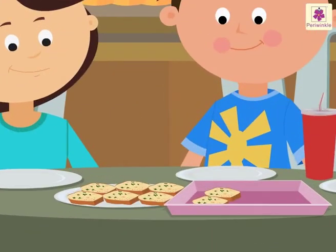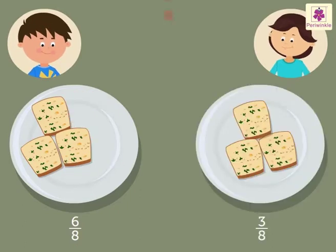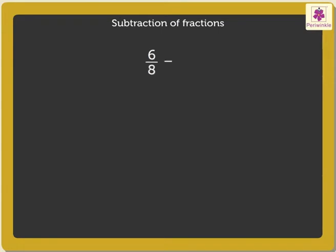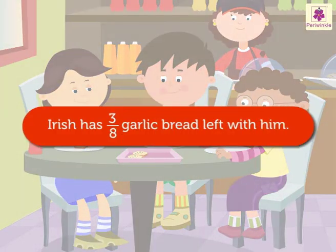Look here. Irish has six-eighths of the garlic bread. Pearl ate three-eighths of it. How much garlic bread is left with Irish? We subtract the fractions 6 upon 8 and 3 upon 8. They being like fractions, we directly subtract the numerators. So, 6 minus 3 upon 8 is equal to 3 upon 8. Thus, Irish has three-eighths of garlic bread left.